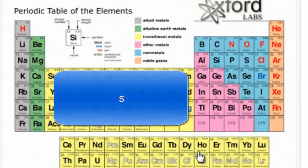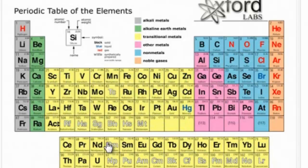These elements are called the inner transition metals. And they fit in right here after lanthanum and actinium.